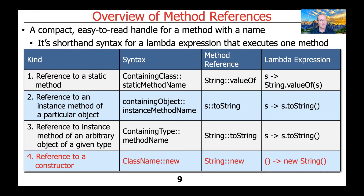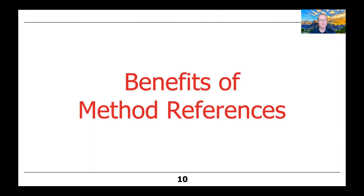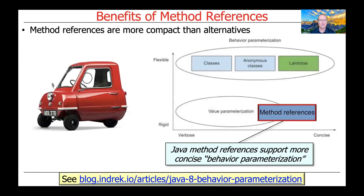So those are the four different types of method references with some examples. Let's now talk about some of the benefits of using method references. Method references are more compact than alternative mechanisms, in particular things like anonymous classes, Lambdas, and regular old classes. If you take a look at this diagram here, you can see how Java method references support a very concise form of behavior parameterization. It's not as flexible as Lambdas, but it's very, very concise.